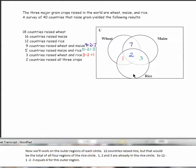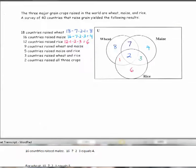And we'll do a similar calculation for the other circles. 16 countries raised maize. So 16 minus 7 minus 2 minus 3 equals 4.